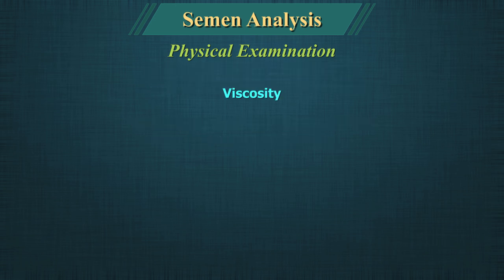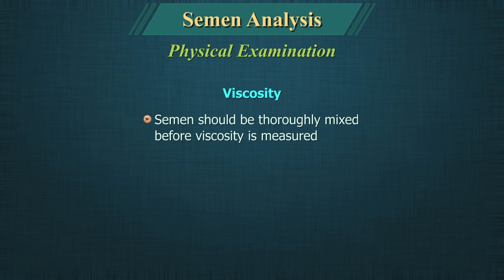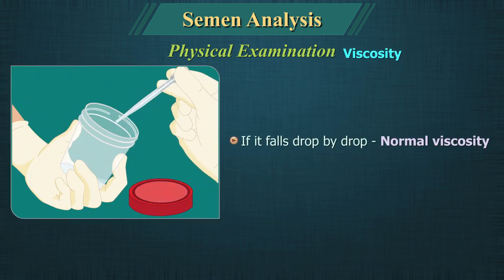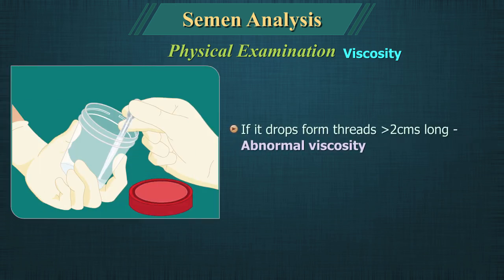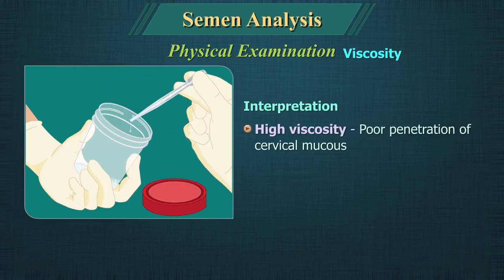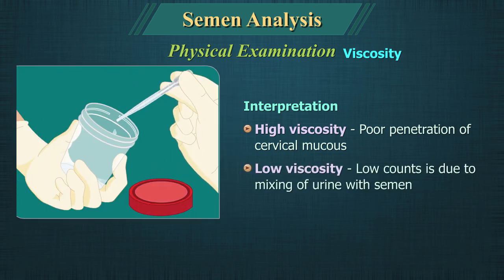Viscosity: The semen should be thoroughly mixed before viscosity is measured. It is assessed by dropping semen from a plastic disposable pipette. If it falls drop by drop, viscosity is normal. Abnormal viscosity is when drops form threads more than 2 cm long. High viscosity may be associated with poor penetration of cervical mucus. Low viscosity may be associated with low counts.